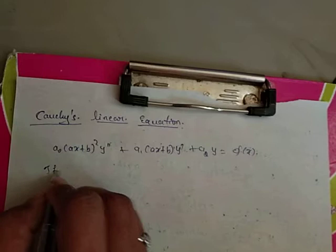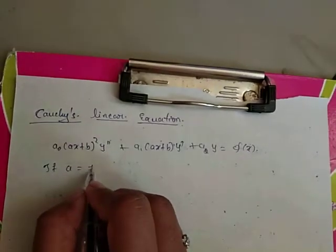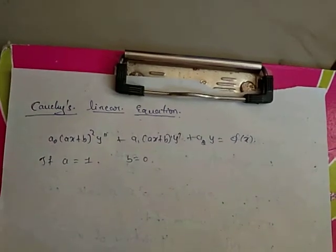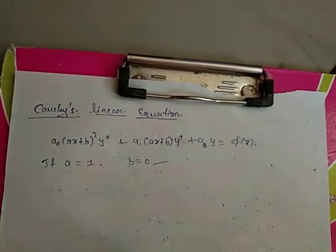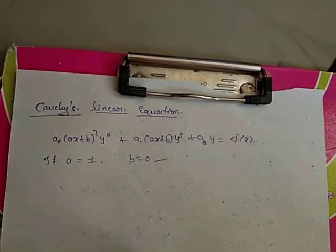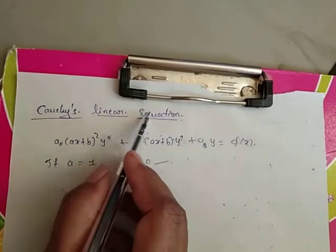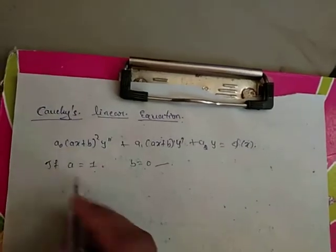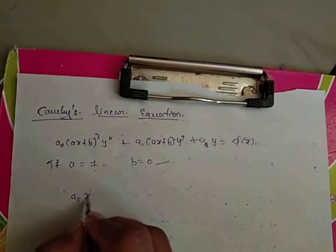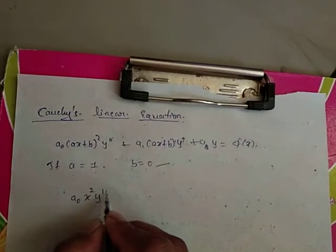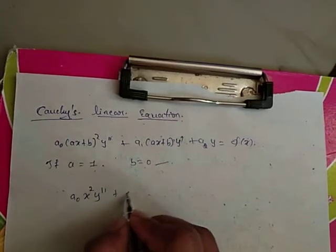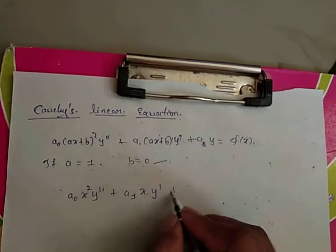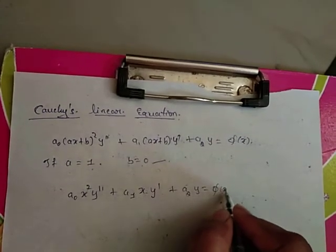Suppose A = 1 and B = 0. In this particular case, Legendre's linear equation is converted to Cauchy's linear equation. Substituting A = 1, B = 0, the Cauchy's equation becomes: A₀ X² Y'' + A₁ X Y' + A₂Y = φ(X).